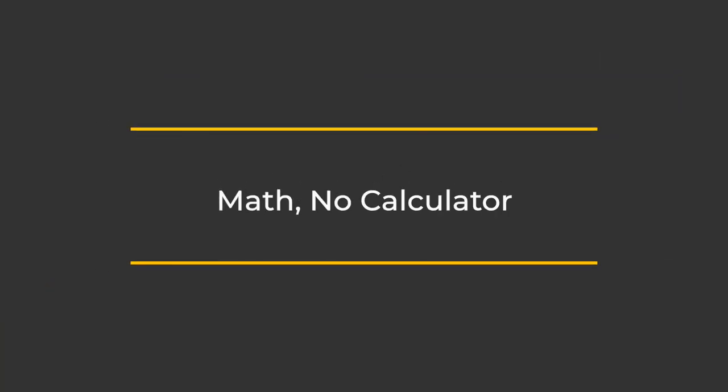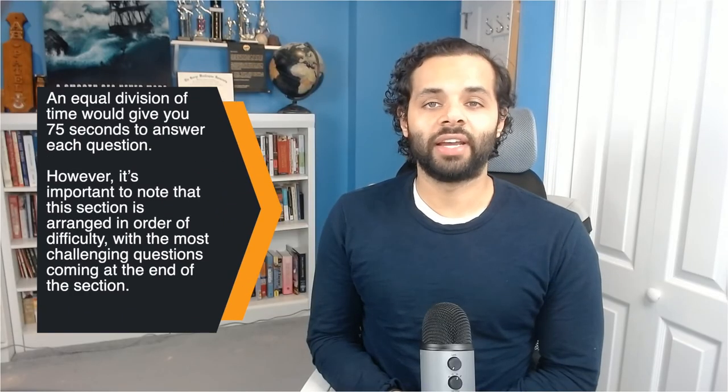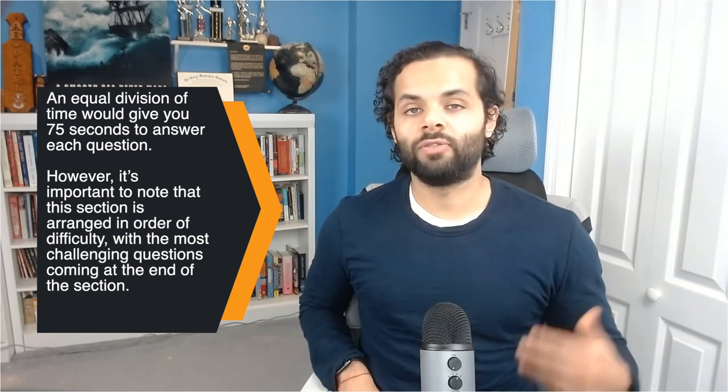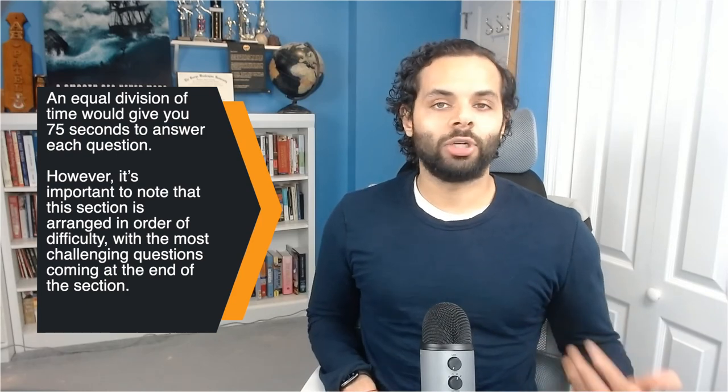For math no calculator, the section consists of 15 multiple choice questions and 5 grid-in questions — 20 questions total. You have 25 minutes to answer them, which gives you about 75 seconds per question if divided equally. However, this section is arranged in order of difficulty, with the most challenging questions at the end. For that reason, it's a good idea to spend about 60 seconds on each question when possible, allowing slightly more time for the most difficult questions.